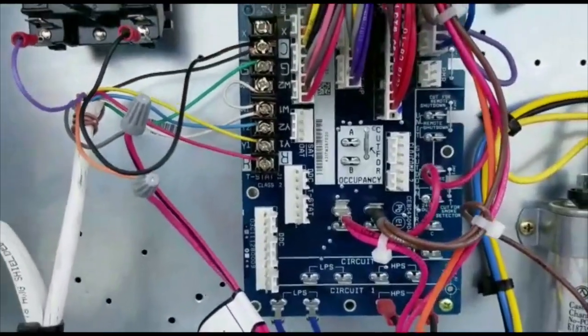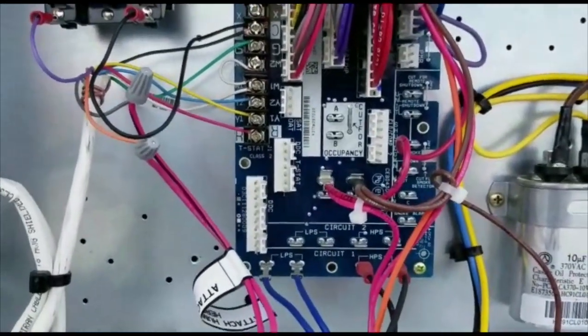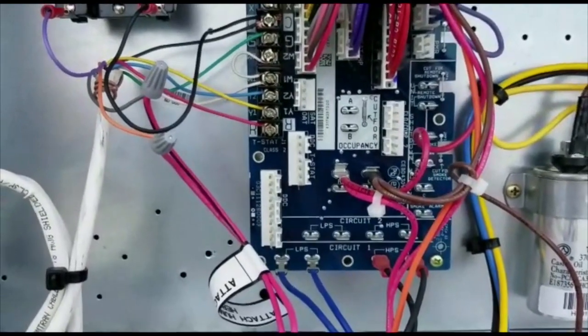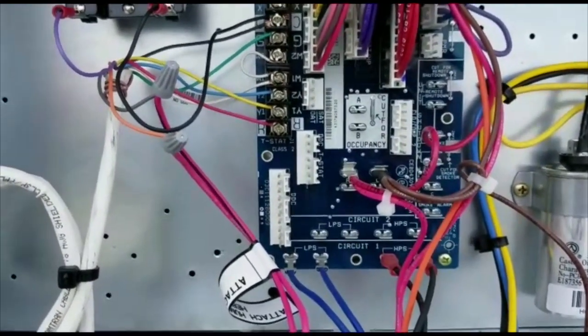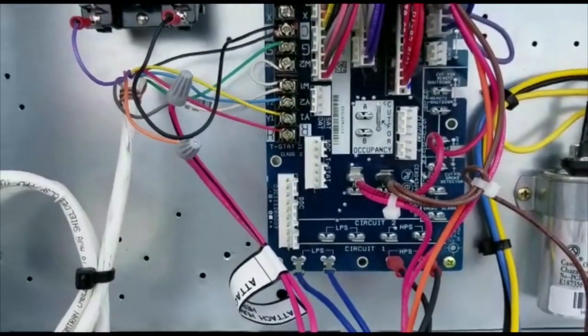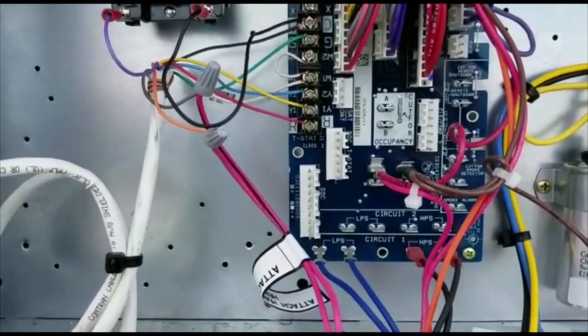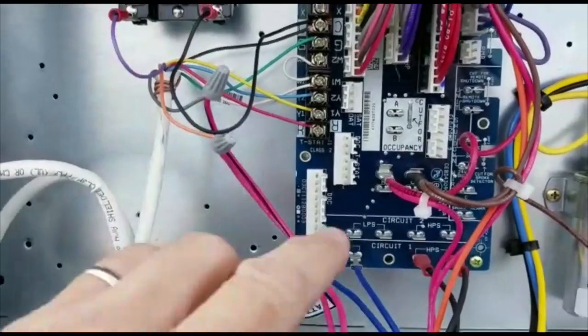Hey guys, I know there's been a lot of questions lately about how to wire the economizer for demand ventilation and occupied periods. So here we're at Koch Ford and these are Carrier rooftops. If you notice here on the board...